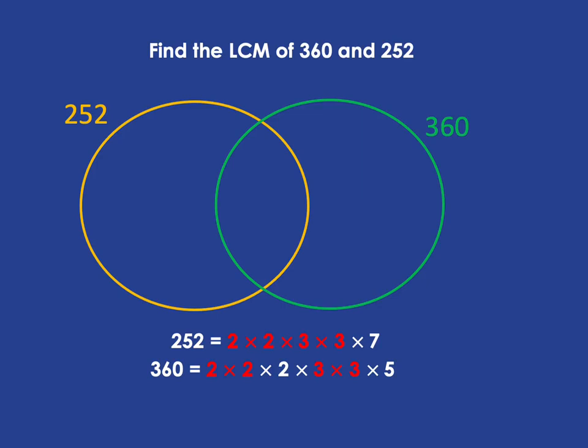So in that overlap between the yellow and green circles, that's where we're going to put the stuff that's in both of those numbers, so the prime factors that are in both those numbers. So what we've got in both those numbers is the 2 times 2 and 3 times 3. Then to complete our 252, we still need a 7. And to complete our 360, we need the 2 and the 5.